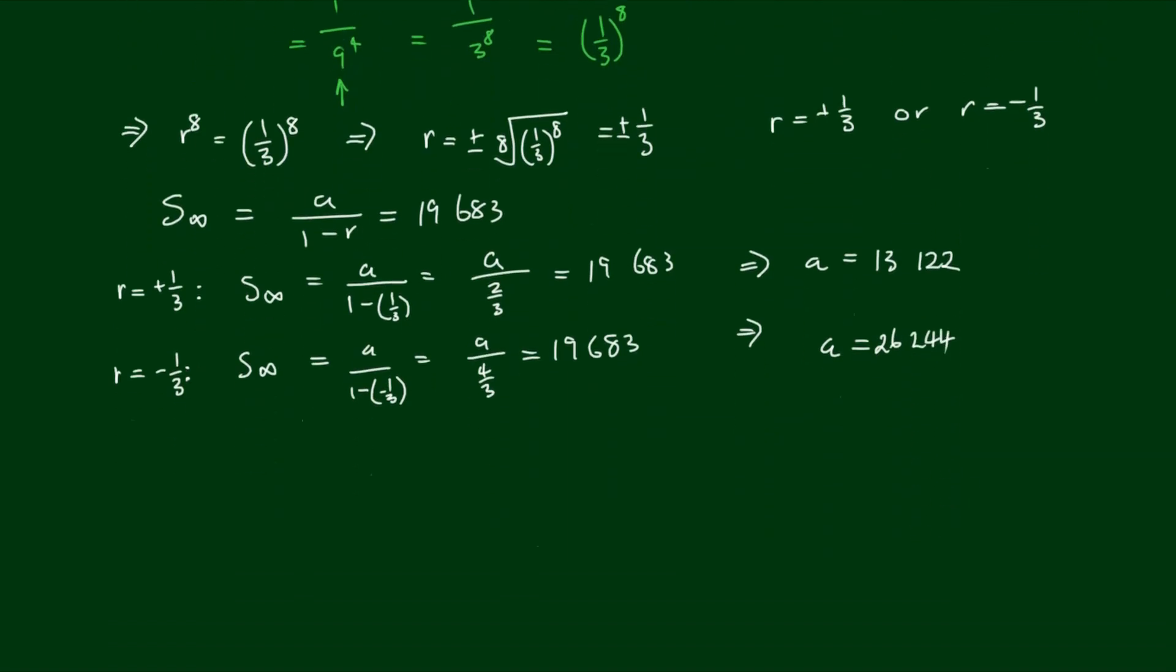So to summarize, we found that either the common ratio is equal to positive 1 third, for which the first term will be 13,122.